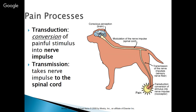Transduction is the conversion of the painful stimulus into a nerve impulse, and it occurs where the stimulus occurs. For example, an animal stepping on a pin — that sharp pressure into the foot is converted into a nerve stimulus. Transmission takes the nerve impulse to the spinal cord. At the spinal cord we have modulation of that nerve impulse, which then takes it up to the brain where we have conscious perception. So: transduction, transmission, modulation, perception.